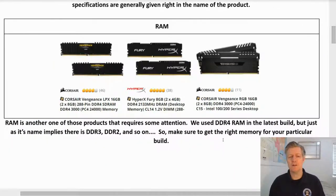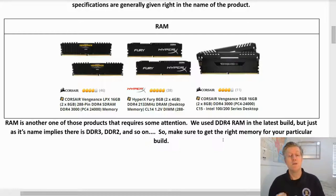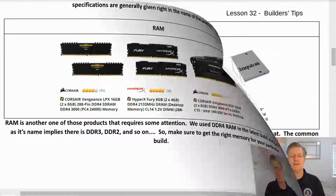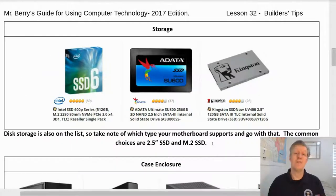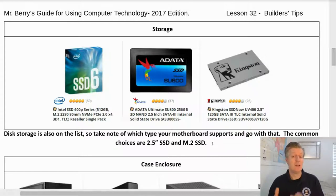RAM is another one of those products that require some attention. We used DDR4 RAM in the latest build, but just as its name implies there is DDR3 and DDR2 and so on, so make sure that you get the right memory for your particular build. Disk storage is also on the list, so take note of which type your motherboard supports and go with that. The common choices are 2.5 inch SSD and M.2 SSD.